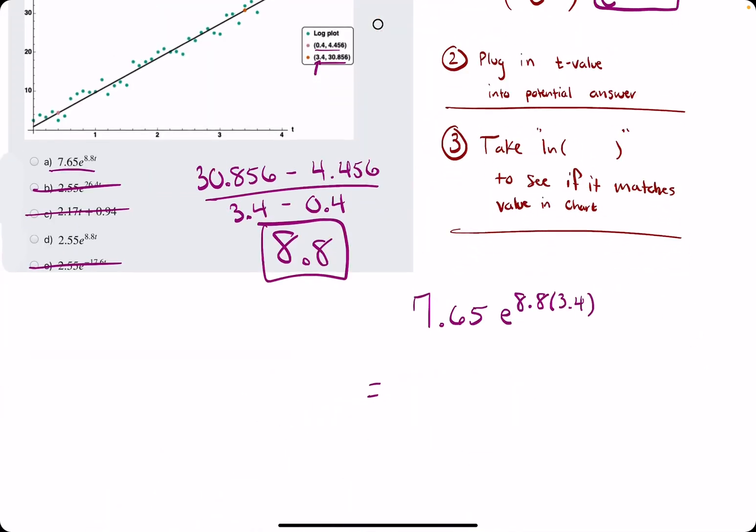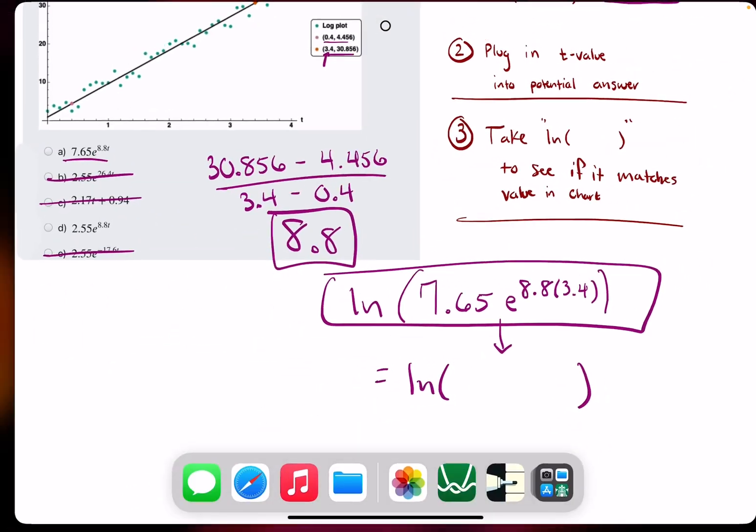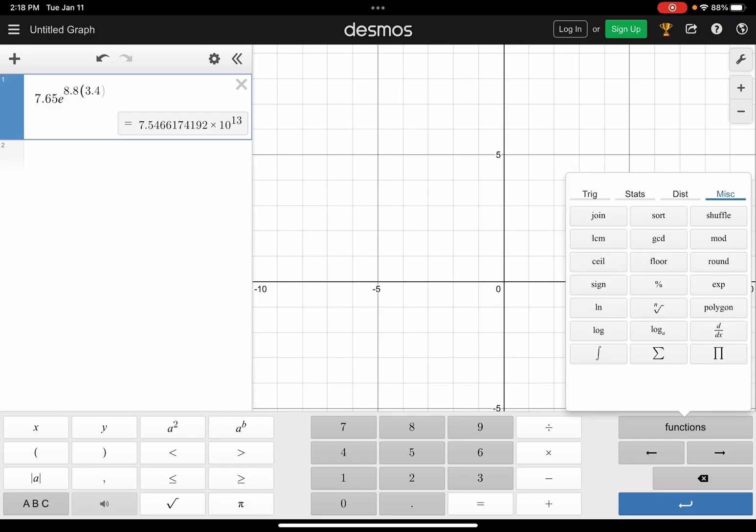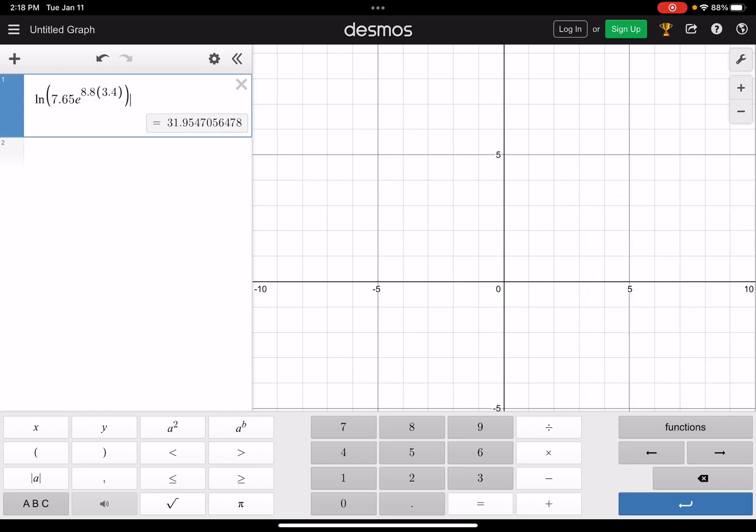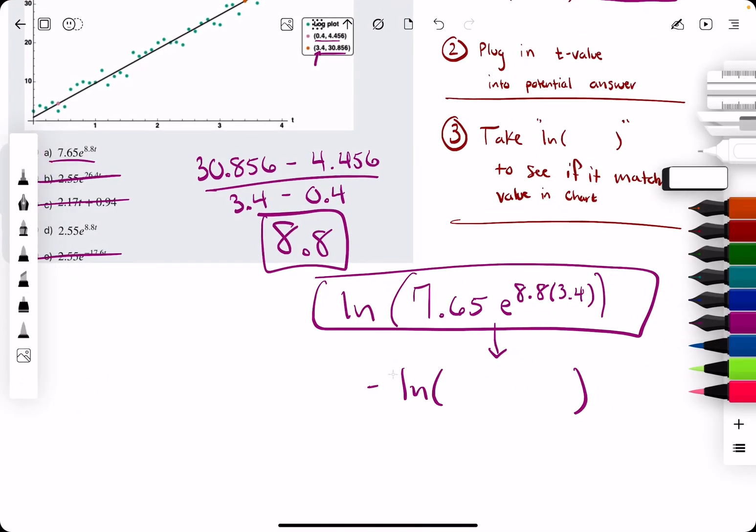So what we're going to do is take the natural log of that value. So I may even just insert an ln around this operation that we did in Desmos to make it easier so I don't have to try to type in this super large number. So let's see what happens when I take the ln of all of this here. So we actually get 31.95, a much more manageable value.